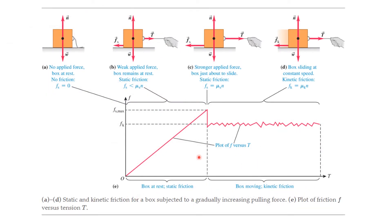It turns out there is not just the force of moving — you may realize it takes a little more to get something started moving. What happens is that the box is at rest and doesn't start moving until you apply a certain force to break it free, and then it moves. This is called the static friction force to get it started, whereas the other is called the kinetic friction force. The static friction coefficient is actually a larger value.